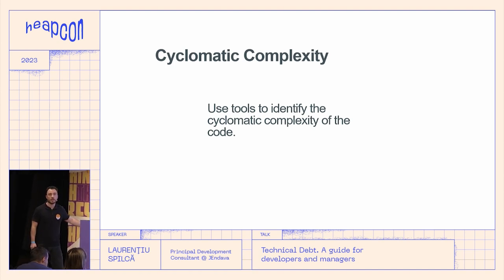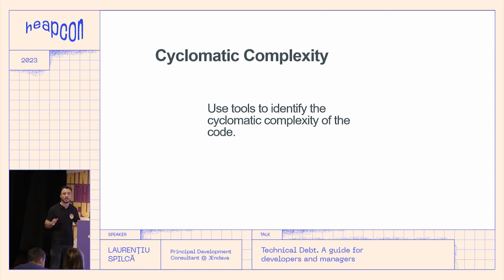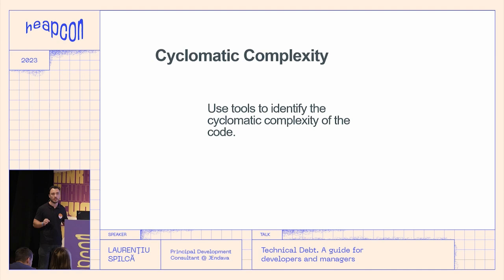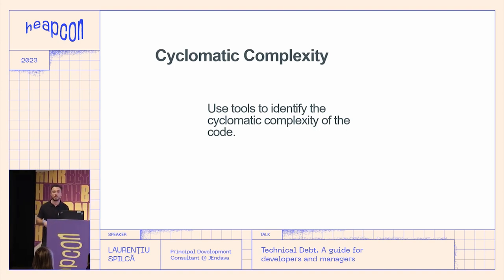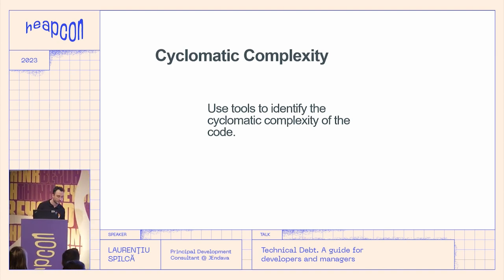Cyclomatic complexity can give you insight into how your developers are progressing. Most problems have simple solutions — the more cyclomatic complexity you find in your code, the more likely those solutions are not well implemented. With high cyclomatic complexity, it's also difficult to implement tests, so the higher it becomes, the lower the level of unit and integration testing tends to be.